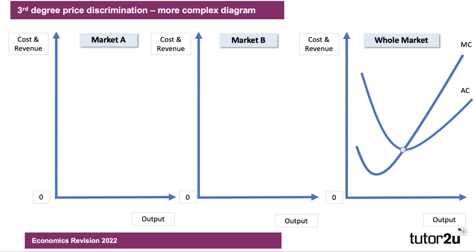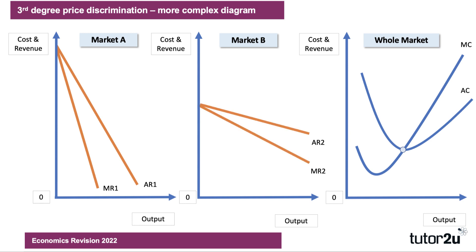You need three diagrams — three X and Y axes for this. Let's assume you have one group, market A, with a relatively price inelastic demand. Whereas in market B, the people who inhabit that sub-market tend to be perhaps students or OAPs. Their demand is more price sensitive and more consumers are not willing or able to pay high prices. So you've got two distinct groups, market A and B.